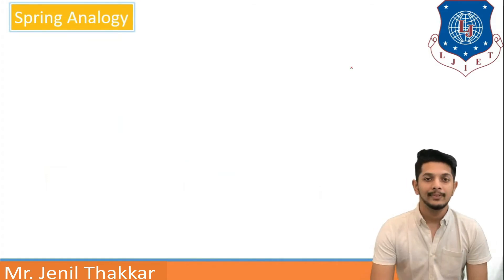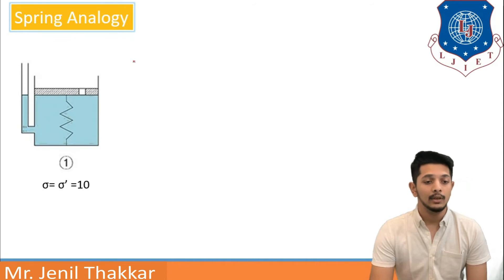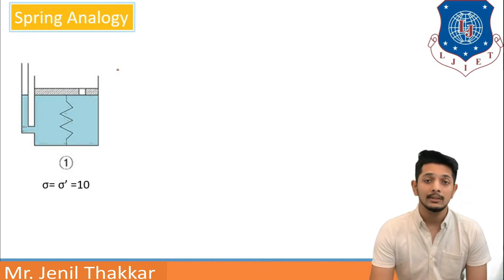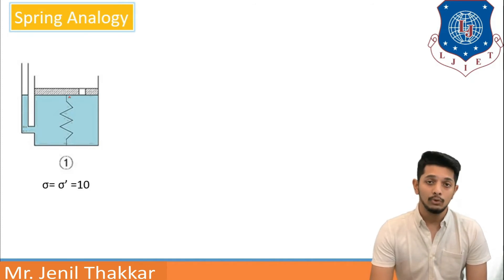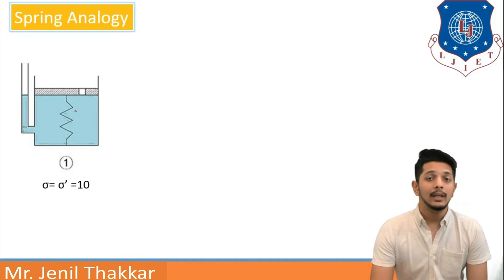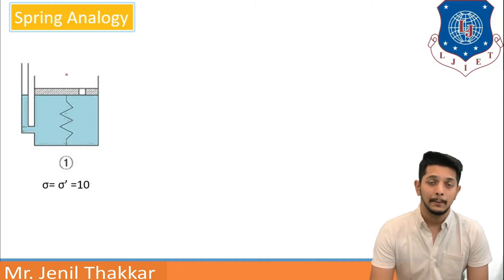The process of primary consolidation can be understood by the spring analogy. In this figure, we can see a piston and spring hanging in a cylinder full of water, which basically represents a soil-water system. In the first case, the piston and spring are in place, the valve is opened, and water is filled into the cylinder. Then an external load is applied to the piston so that the spring and water are under pressure.